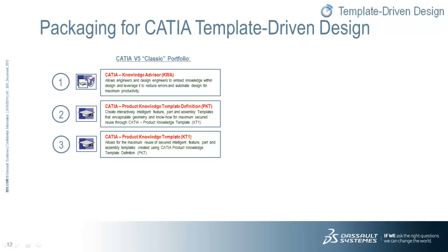The packaging for CATIA KnowledgeWare template-driven design consists of three products within the CATIA V5 Classic Portfolio — the portfolio that includes configurations MD2, HD2, etc. These three products, KWA, PKT, and KT1, can be purchased as add-on or shareable.